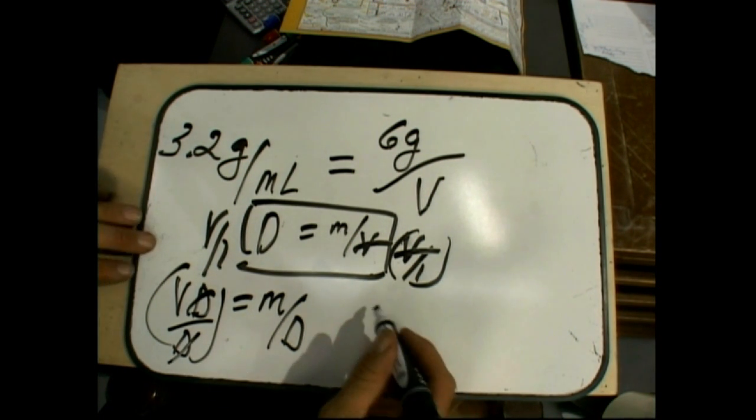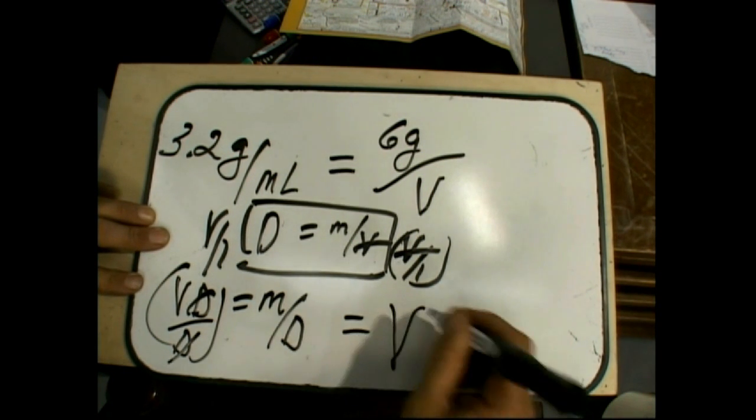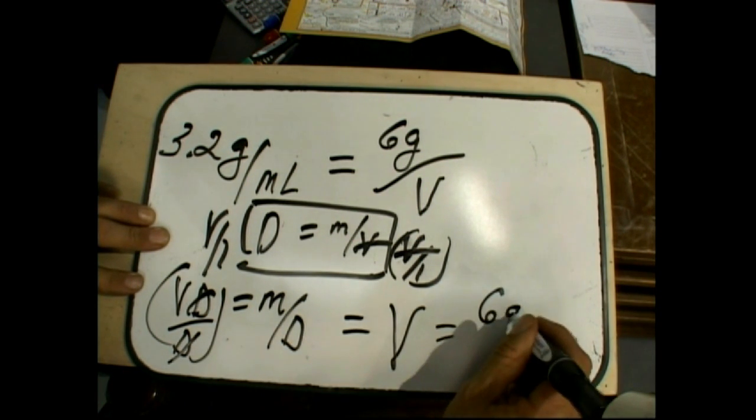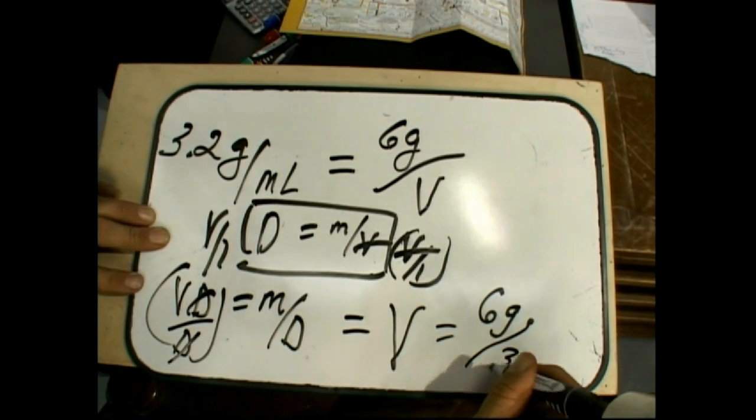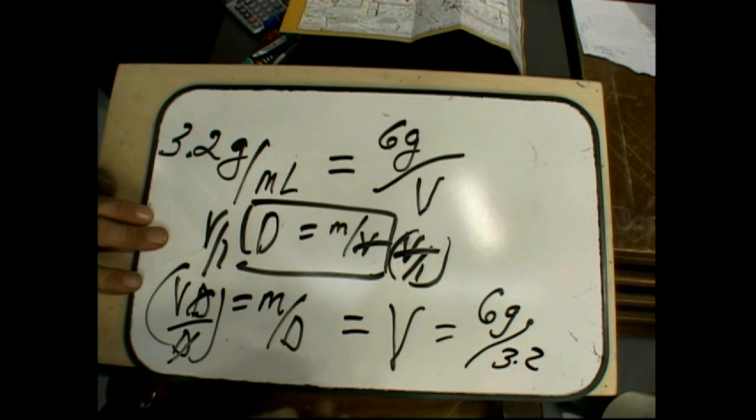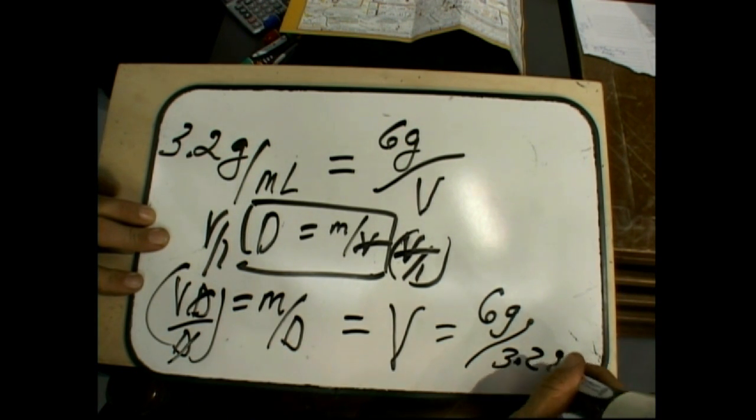So you're given six grams of something. The volume is going to equal the six grams divided by the density, which we picked as 3.2. Write the units in there. This is how important it is. 3.2 grams over milliliters.